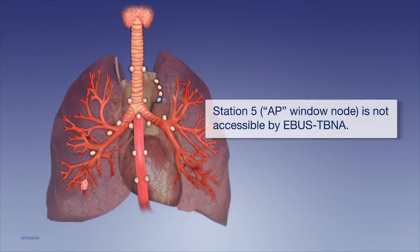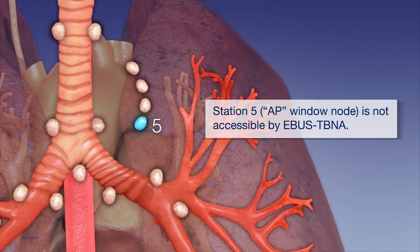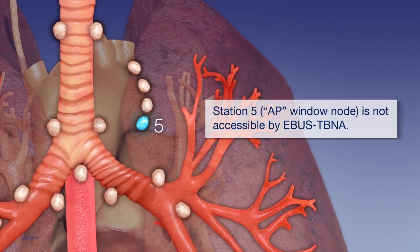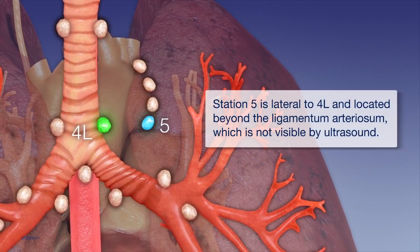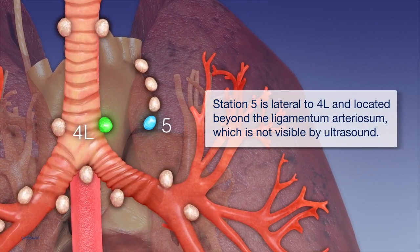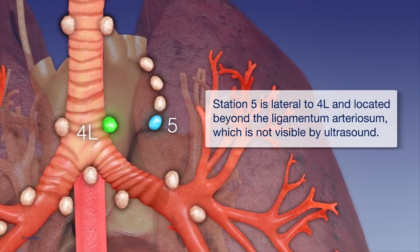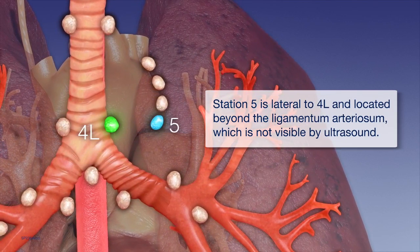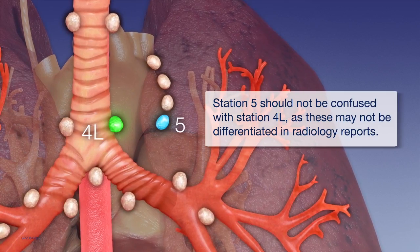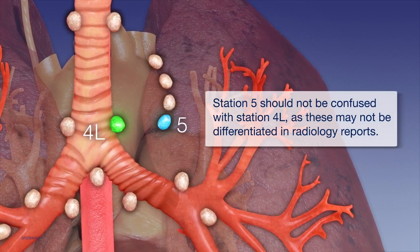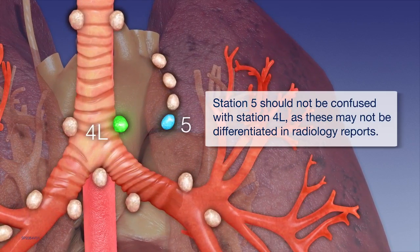Station 5 is often called the AP window node and is not accessible by EBUS TBNA. Station 5 is lateral to 4L and is located beyond the ligamentum arteriosum, which is not visible by ultrasound. Station 5 should not be confused with Station 4L, as these may not be differentiated in radiology reports.